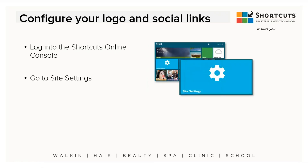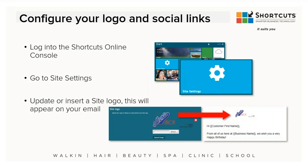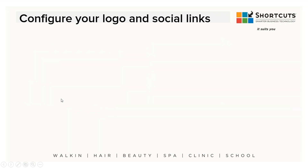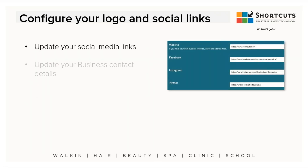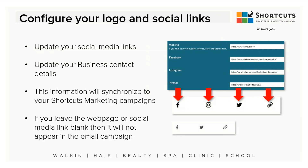From the Console, go to the Site Settings button — it has a little gear icon — and that's where you update your logo, which appears on your emails if you choose. The other things you configure there are your main social media pages including your company website. You'll update your contact information: business phone number, business email, website, and social media — Facebook, Instagram, Twitter.